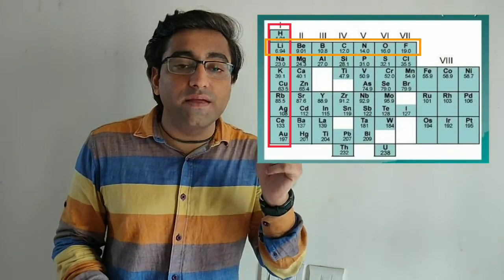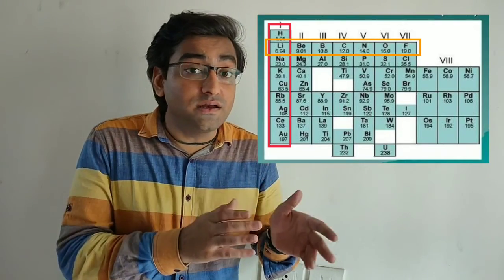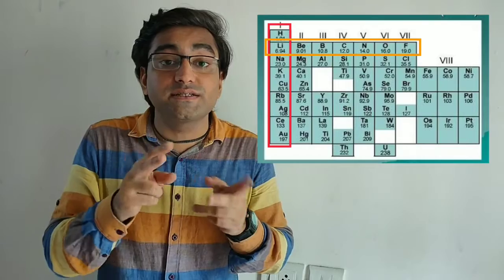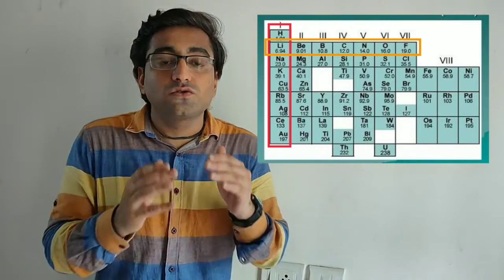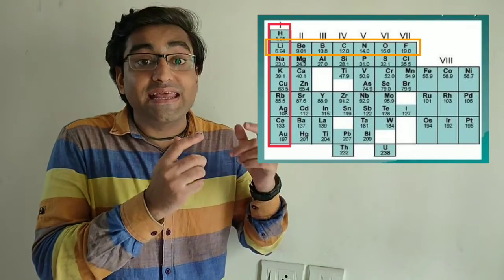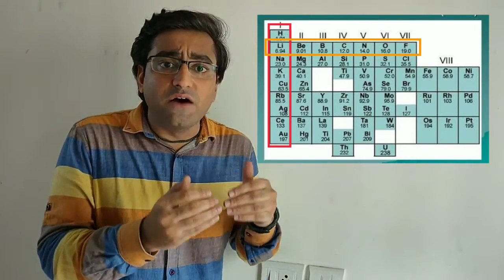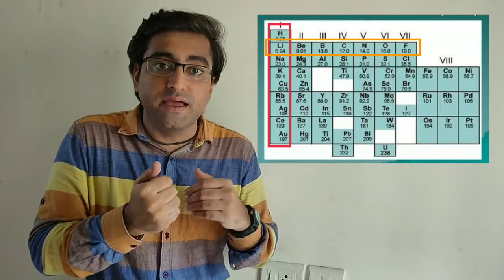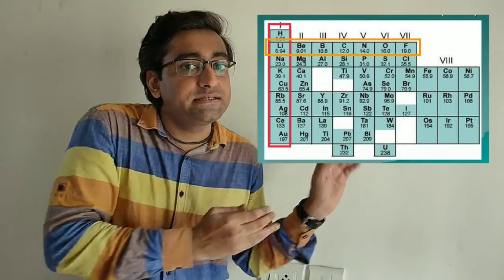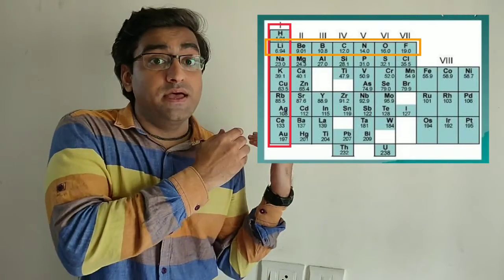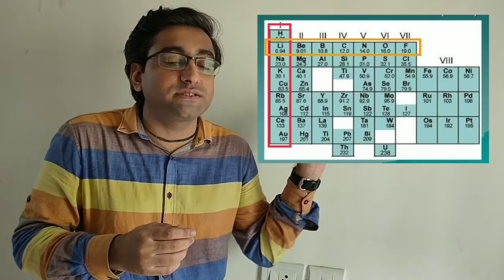Let us apply the same logic to this table. The first element is hydrogen. As I said earlier, if he finds two elements have similar properties, he places them one below the other; if they have dissimilar properties, he places them on the side. The next element after hydrogen is lithium. He found that lithium had similar properties to hydrogen and hence placed it below hydrogen. After lithium, the next element is beryllium. He found beryllium has dissimilar properties to lithium, so he placed it on its side. After beryllium, the next element is boron. Boron had dissimilar properties to both lithium and beryllium, and hence he placed it on the side of beryllium.